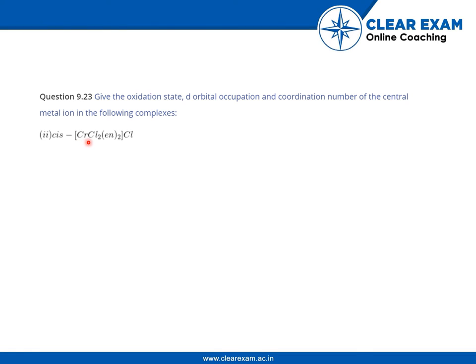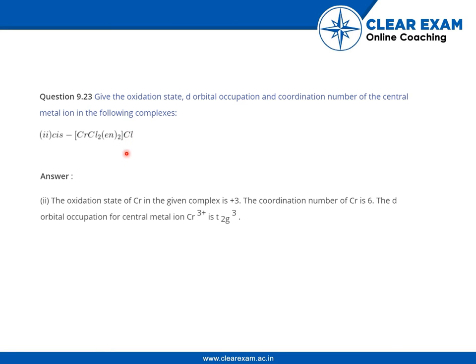Second is [CrCl2(en)2]Cl. The oxidation state is plus 3 - you can see minus 1 for this Cl, minus 2 for these 2 Cls, and en is neutral. So plus 3 will be the oxidation state of Cr.